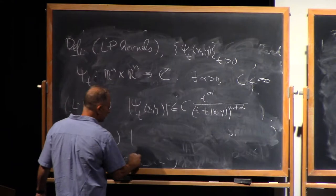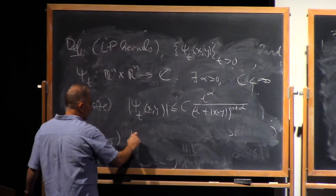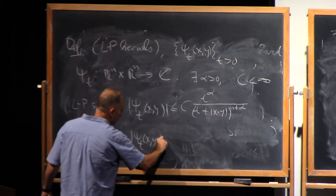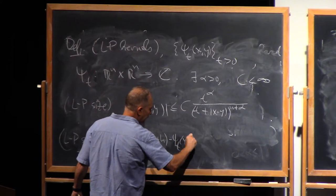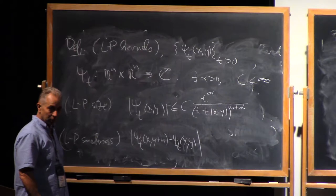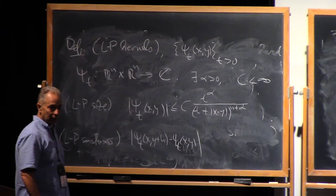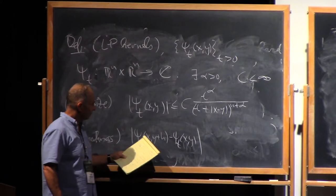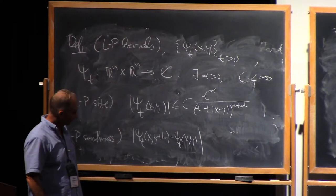Which is basically a local Holder continuity condition in the y variable only. And you might wonder about the x variable. For L2 theory, we don't need it in the x variable. We just need it in the y variable. To do L^p theory, you want it at least for p less than one... sorry, for p bigger than one. For p bigger than two, I should say. For p bigger than two, you want smoothness in the x variable as well, but we're not gonna worry about that.